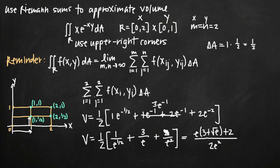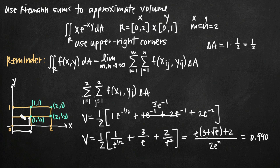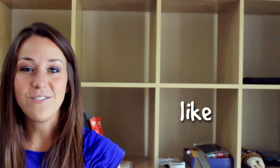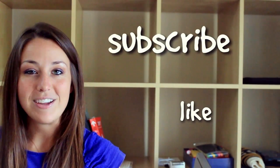Since we've been asked to find an approximation of volume, you really want to give a decimal approximation. Whether you reach the fully simplified form or stop earlier, you can plug everything into your calculator. The approximation for volume comes out to 0.990 — an approximation of the volume sitting on top of the rectangle and below the function, based on 4 rectangles and their upper right-hand corners. I hope you found that helpful — like and subscribe to be notified of future videos.